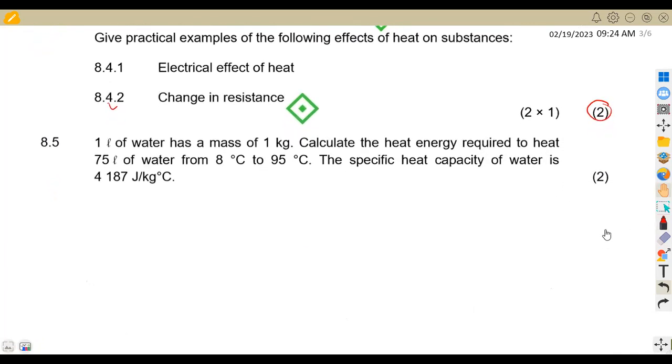8.5, we are now given one liter of water is the mass of one kg. Calculate the heat energy required to heat 75 liters of water from 8 degrees to 95 degrees. So take note, we want to calculate heat, and we know that heat is equivalent to mass times the specific heat capacity times the change in temperature.